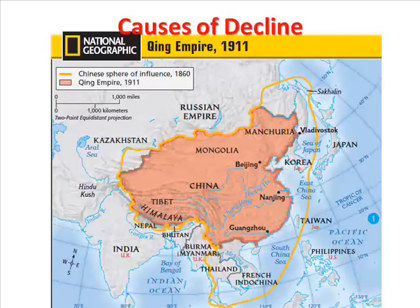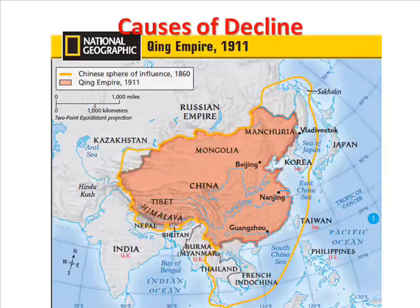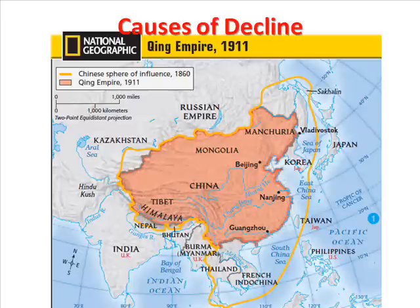Causes of Decline. In 1800, the Qing Dynasty was at the height of its power. During the next hundred years, however, it declined and collapsed. One important reason for the decline was external pressure from Westerners, but internal problems also played a role. The Qing Dynasty began to have problems with corruption, peasant unrest, and incompetence.